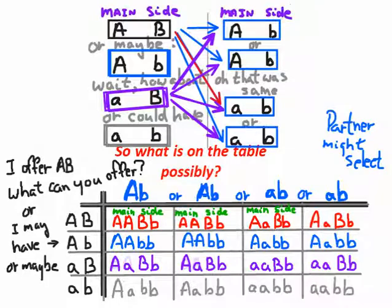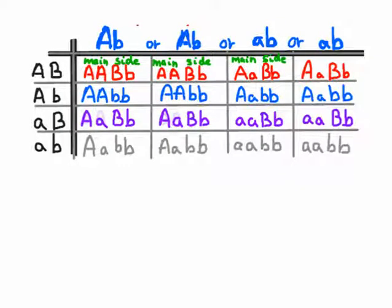Notice that some of your partner's choices were the same. She would never choose big B — she never had a big B to offer. She never brought a big B to the table. She didn't have a big B in her alleles, in her chromosomes, in her genes. So she couldn't possibly offer up a big B — it wasn't even a choice.